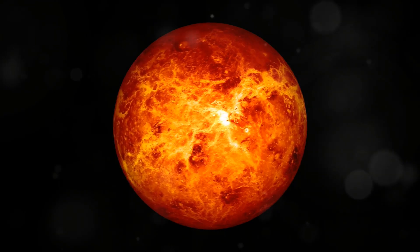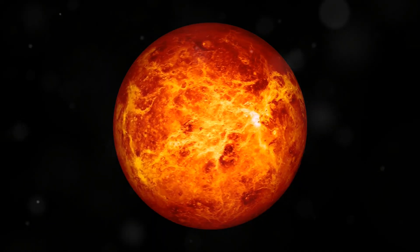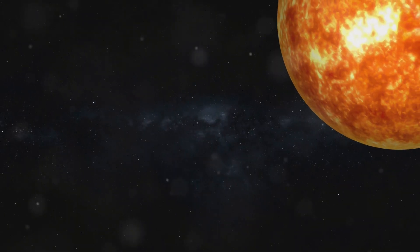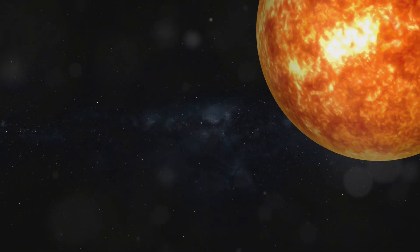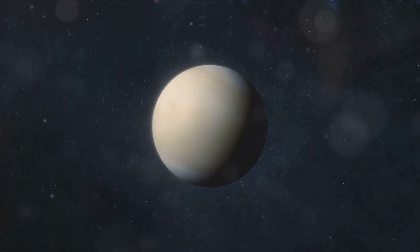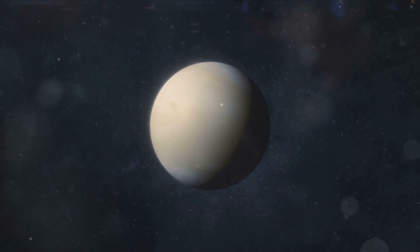Venus has another unusual phenomenon. Its day is longer than its year. The planet rotates very slowly on its axis. One full rotation takes 243 Earth days. Meanwhile, Venus orbits the Sun in 225 Earth days. It's as if a day lasted almost two of our months.